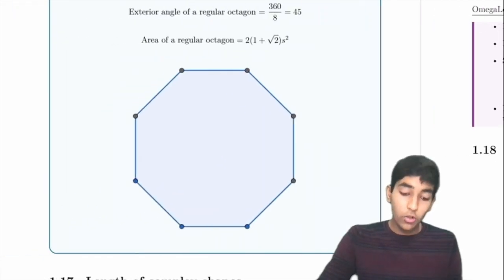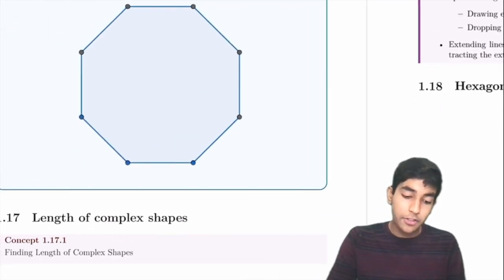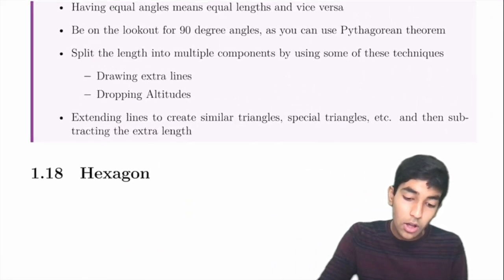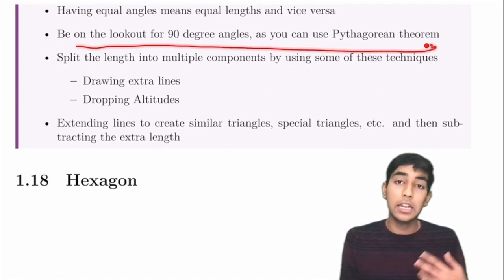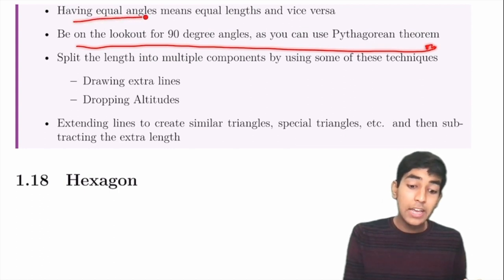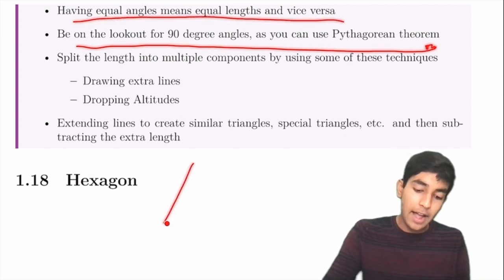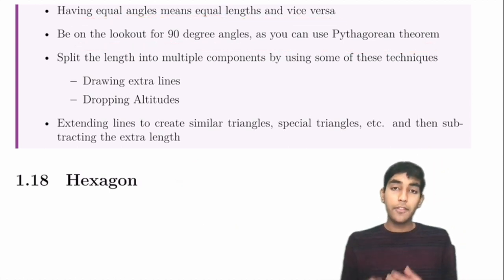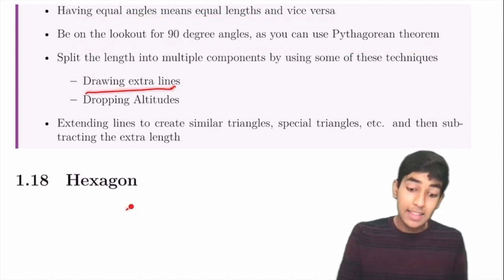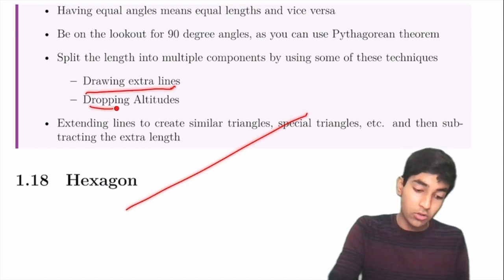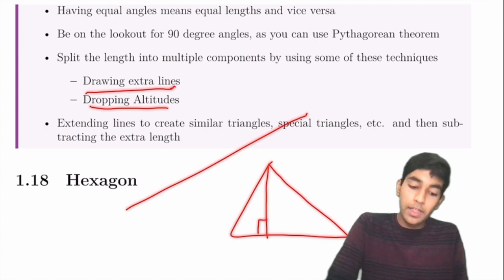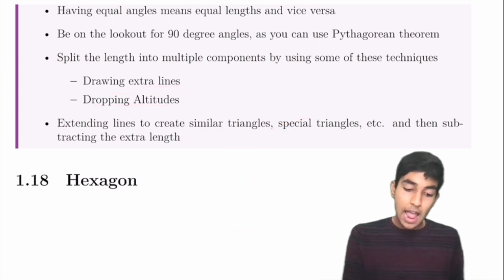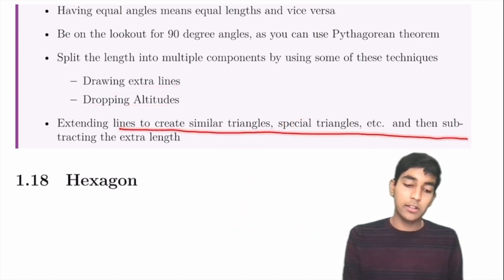For complex shapes, look out for the Pythagorean theorem by finding 90-degree angles. Equal angles mean equal lengths by the isosceles triangle property. Useful techniques include drawing extra lines, extending lines, and dropping altitudes. Dropping an altitude on a triangle can create similar triangles, special triangles, and other useful properties.